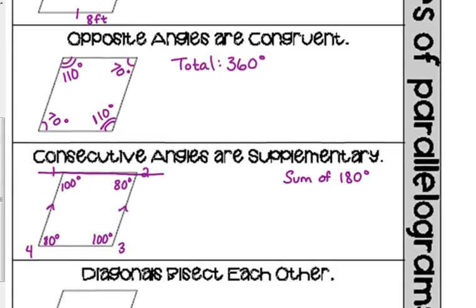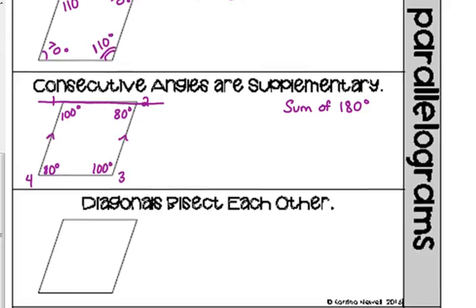All right. So that's our angle stuff. Let's look at the diagonals. Our diagonals have a special property as well. Diagonals bisect each other.